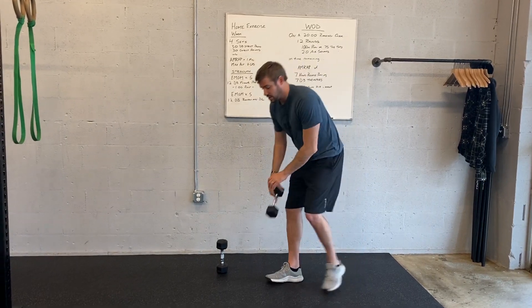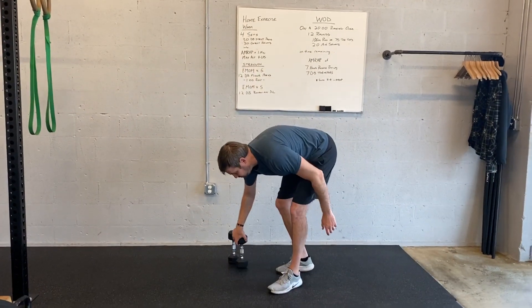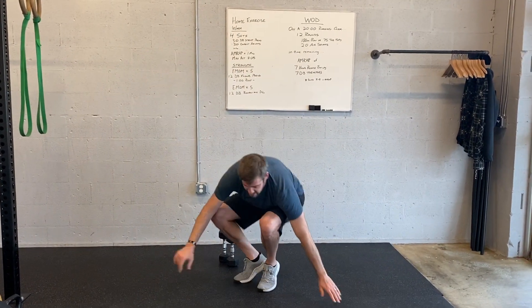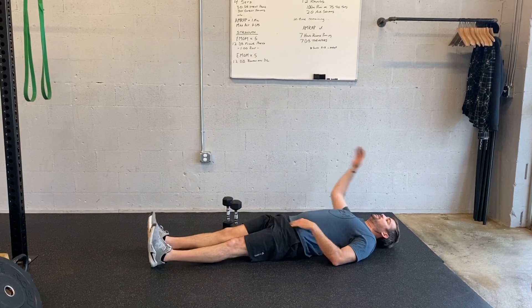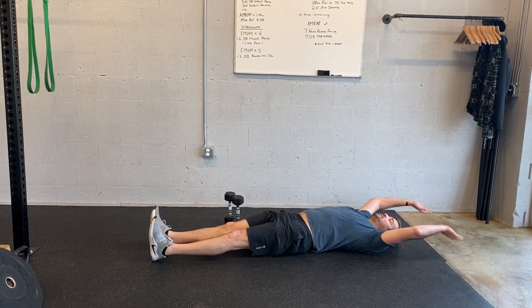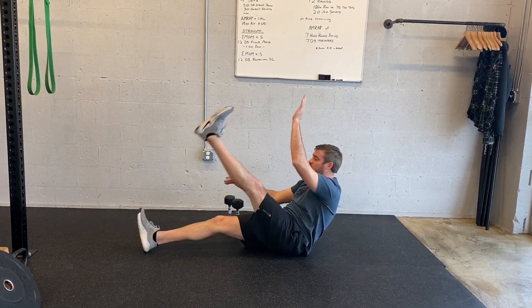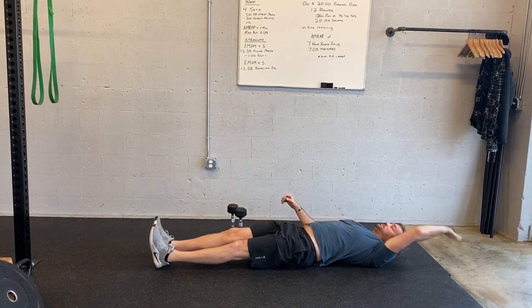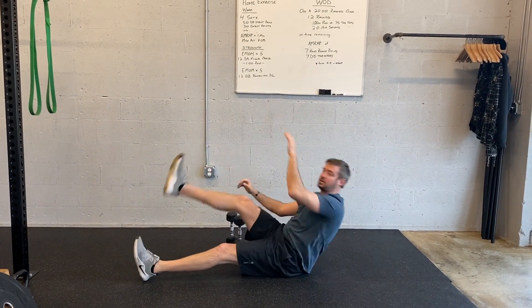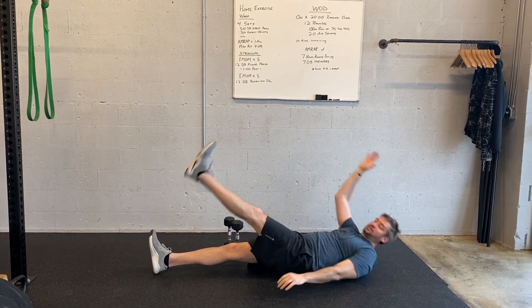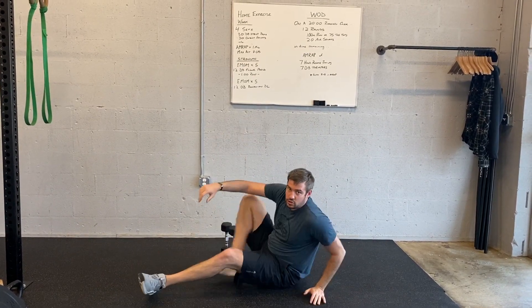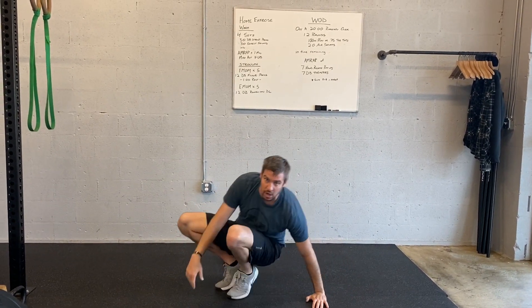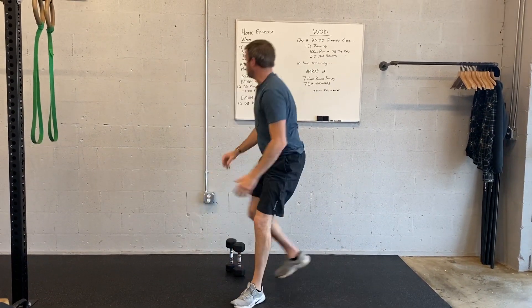For the AMRAP alternating V-ups, you're gonna go right leg and left arm and then alternate like that. Switch your legs and switch your arms every time.